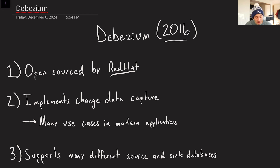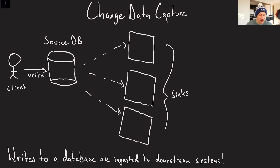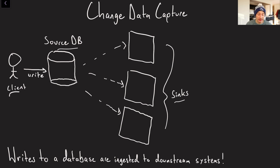Debezium supports a bunch of different source and sync databases in the event that you want to stream changes from one to another. At a high level, what is change data capture? Basically, if a client is writing to some sort of source database, CDC is going to allow you to stream those changes to a bunch of different sync technologies — something like Elasticsearch, a data warehouse, Flink, and so on. All of those writes are going to be ingested downstream.